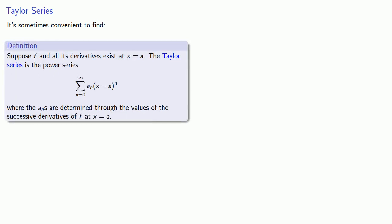Suppose f and all its derivatives exist at x equal to a. The Taylor series is the power series, sum from n equals 0 to infinity, aₙ times (x minus a) raised to power n, where the coefficients aₙ are determined through the values of the successive derivatives of f at x equals a.